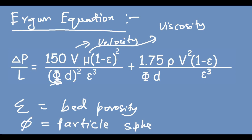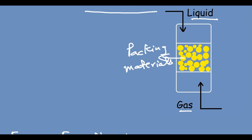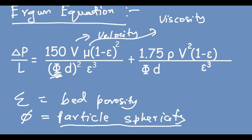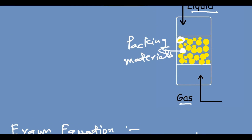This φ (phi) is the particle sphericity — the sphericity of the packing material particles. For a perfectly spherical particle, the sphericity will be one. For particles of other shapes there will be a different sphericity value. I have made a separate video about sphericity, linked in the description. This d is the particle diameter, or if the particle is not spherical, the equivalent diameter of a sphere that would have the same volume as the other-shaped particle.